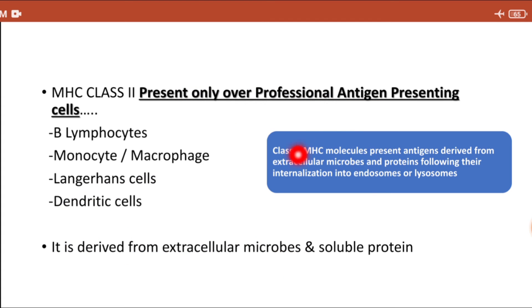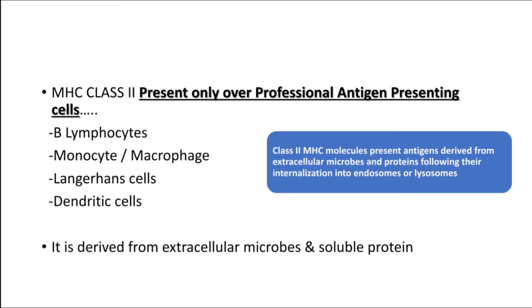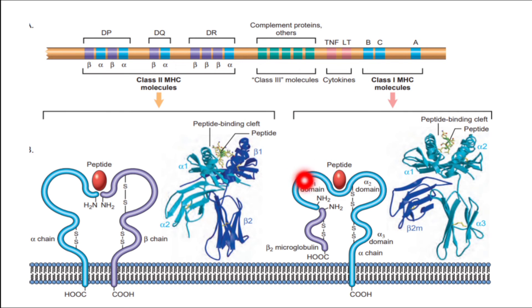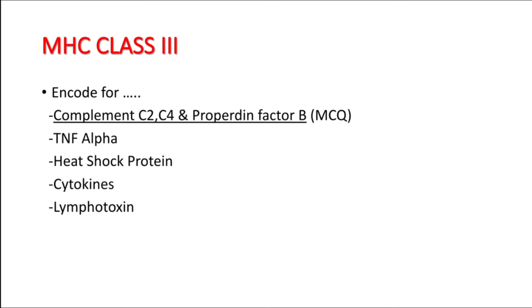MHC class 2 molecules mainly present antigens derived from extracellular microbes and proteins following their internalization into the endosome or lysosome. The MHC class 2 molecule has two chains: an alpha chain and a beta chain. The antigen binding cleft is located between the alpha and beta chains — unlike MHC class 1, where the binding site is between alpha 1 and alpha 2 domains on the alpha chain alone.